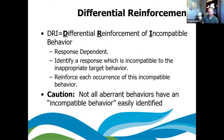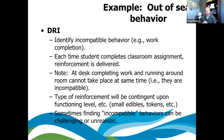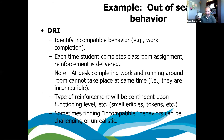DRI — differential reinforcement of incompatible behavior — is response-dependent: you find a response that's incompatible with the target behavior. Example: out-of-seat behavior is the target. We reinforce work completion, defined as being in-seat completing work. Being at his desk and completing work is incompatible with being out of the seat — he can't be doing both. By getting more reinforcement for being in-seat and completing work, you're going to start to change that behavior.